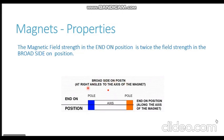The magnetic field strength in the end-on position is twice the field strength in the broadside-on position. For example, if you go one centimeter away from the pole of the magnet and measure the magnetic field strength there, and do the same at the broadside-on position one centimeter away, the field strength at the end-on position is twice as powerful as compared to the field strength at the broadside-on position.